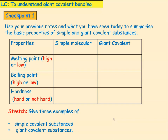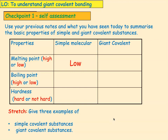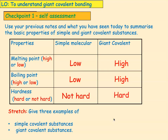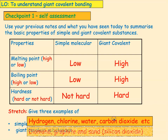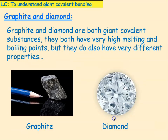Simple molecular substances have low melting points and giant covalent have high or very high. Simple molecular have low boiling points and giant covalent have high boiling points. Simple molecular substances are not hard — most of them are gases — whereas giant covalent are very hard. Examples of simple covalent substances include hydrogen, chlorine, water, and carbon dioxide. Giant covalent examples are diamond, graphite, and sand, which is silicon dioxide.